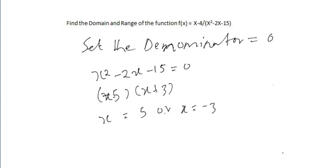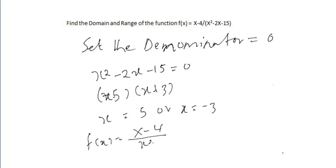We can insert these values to test the function and see if it gives us a defined value. So we look at f(x) = (x - 4) / (x² - 2x - 15) and substitute x = -3.